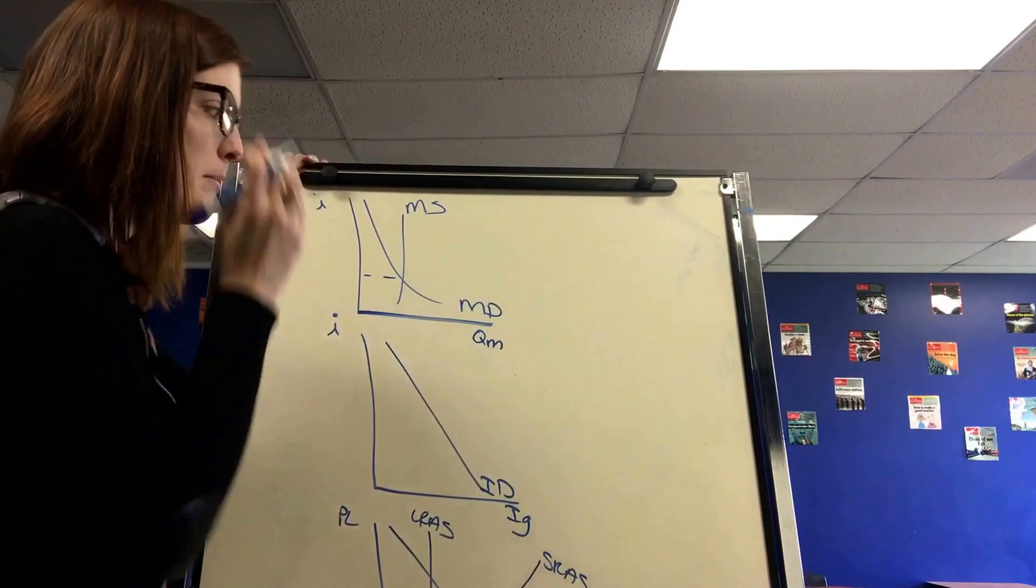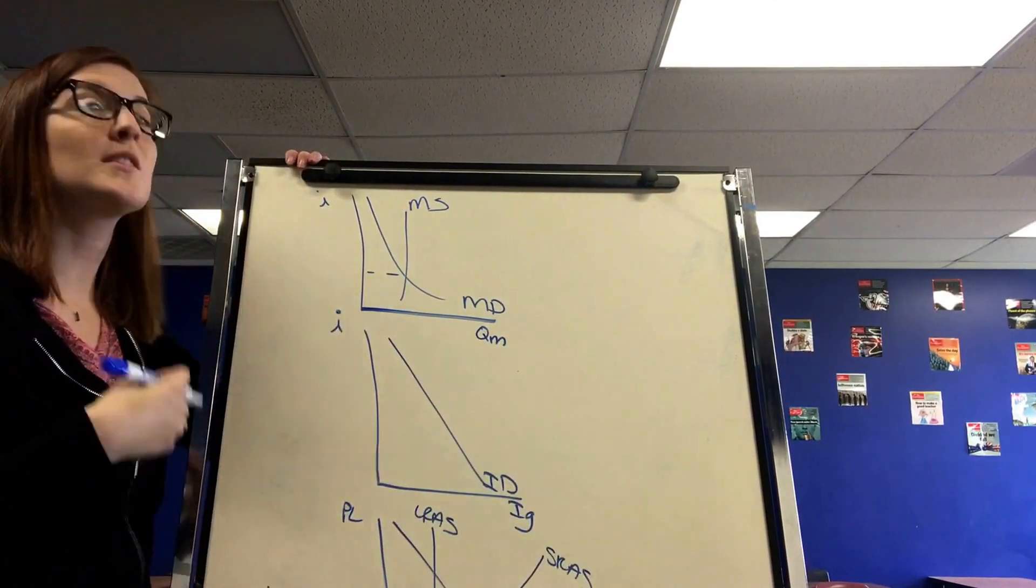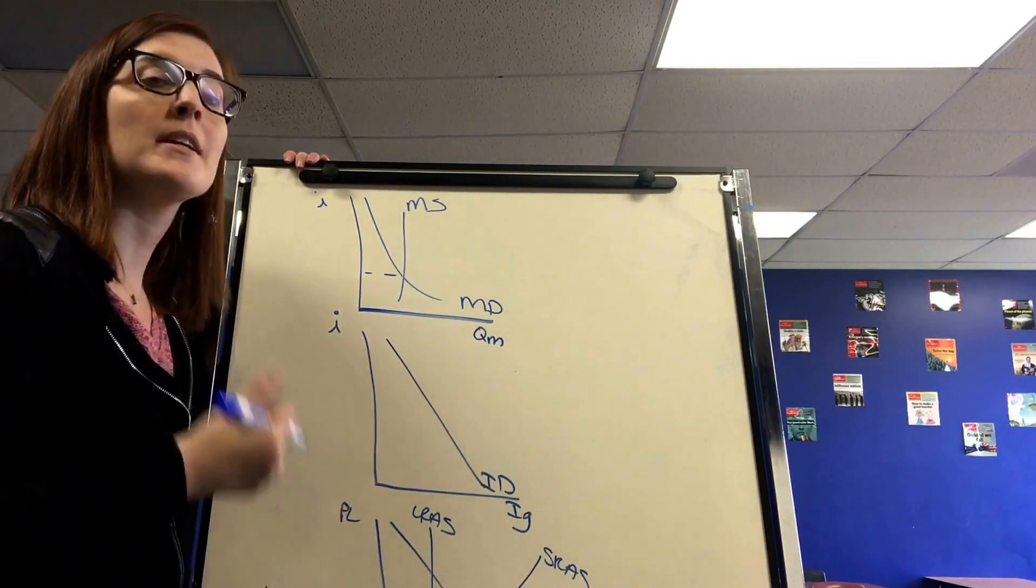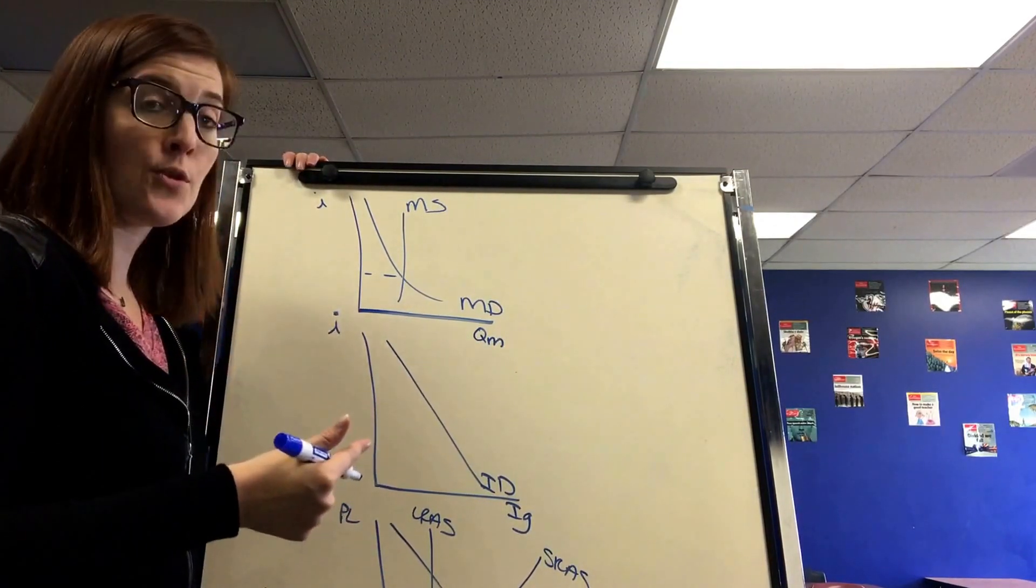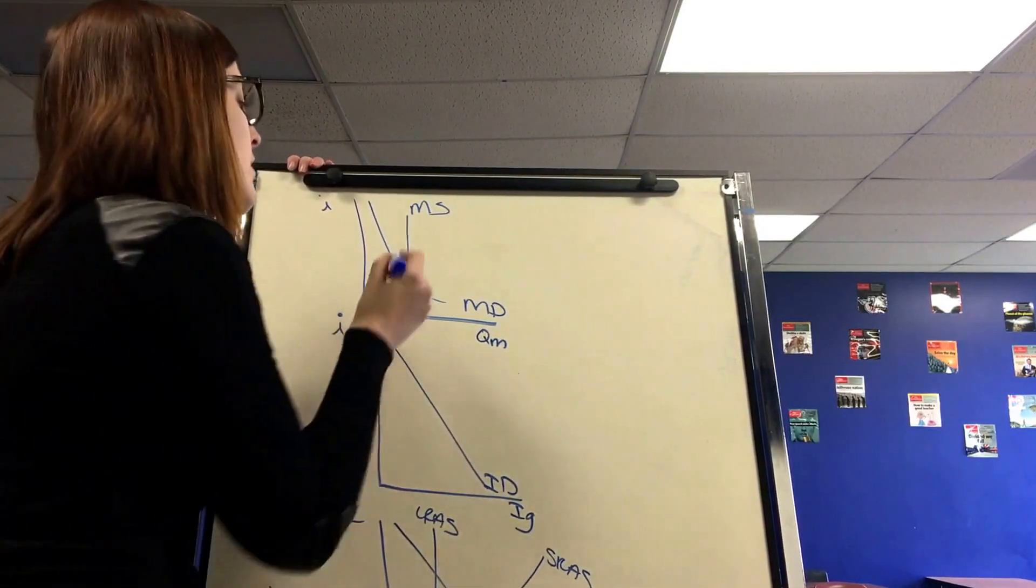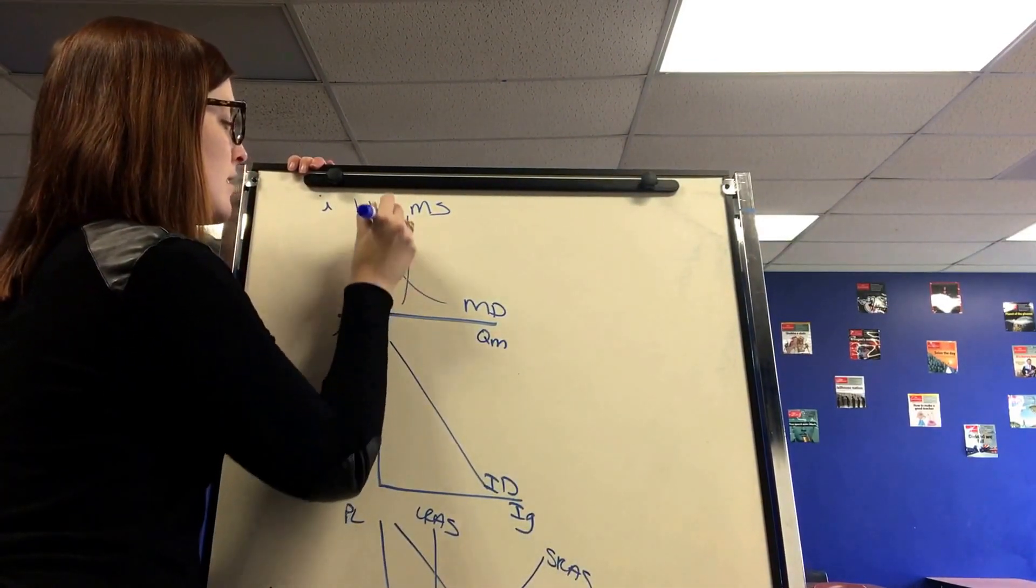So contractionary monetary policy, as I said, is when the Federal Reserve wants to fight inflation by decreasing the money supply. And to repeat, they would do this by selling bonds, raising the reserve requirement, and raising the discount and federal funds rate.